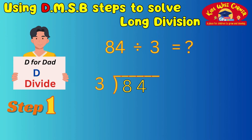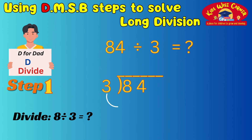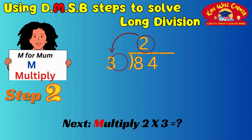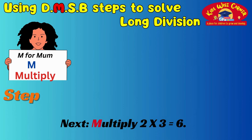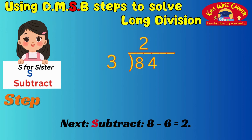Step 1 — divide: look at the first digit of 84, which is 8. Ask yourself, how many times does 3 go into 8? It goes 2 times. Write 2 above the 8. Step 2 — multiply: multiply 2 by 3, which is 6. Write 6 under the 8. Step 3 — subtract: subtract 6 from 8, which is 2. Write the 2 below the 6.